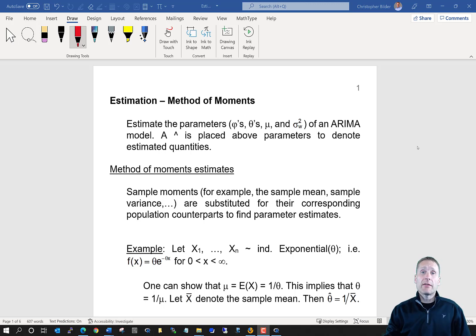Next, we're going to talk about estimation, meaning that we want to estimate the parameters in our ARIMA model: the phis, the thetas, mu, sigma squared w. Now, when we do come up with an estimate, we will refer to the estimate as something like phi hat one. So we put a hat on top of the corresponding Greek letter to denote an estimate. So phi hat one estimates phi one.